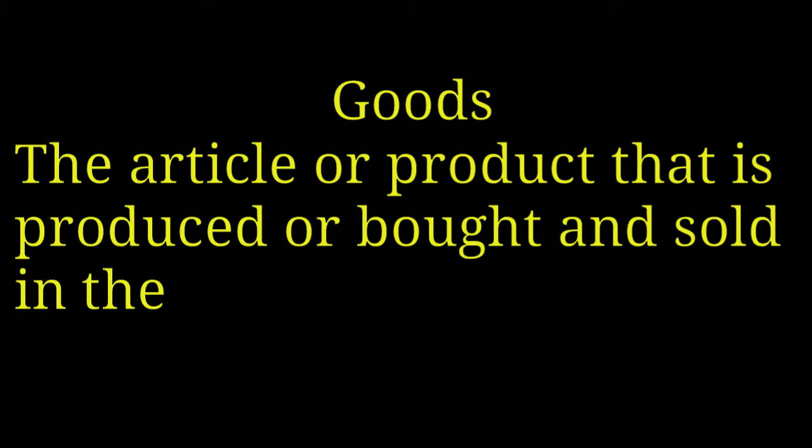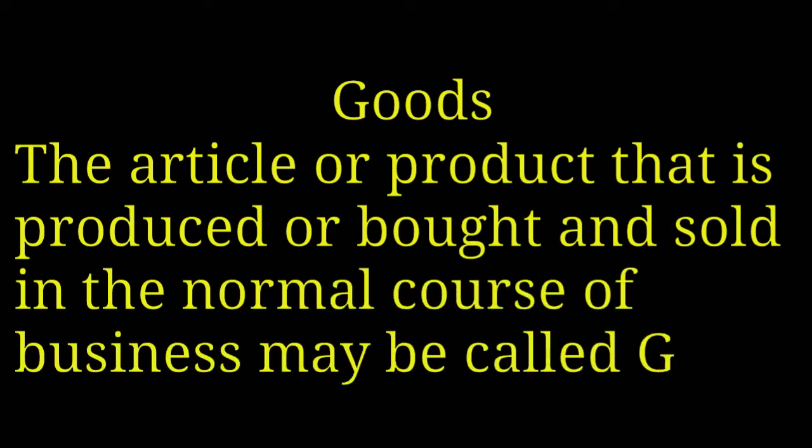Number 21, Goods. The article or product that is produced or bought and sold in the normal course of business may be called goods. For example, furniture is considered as goods for the dealer of furniture, but furniture is considered as an asset for a businessman who is not involved in the purchase and sale of furniture. So the same article may be considered goods from one's point of view and an asset from the other point of view.